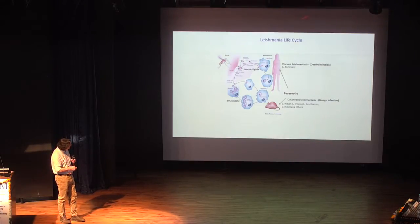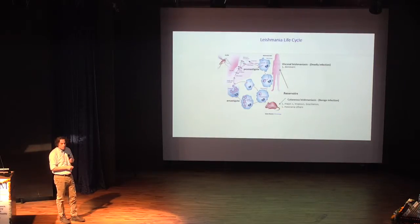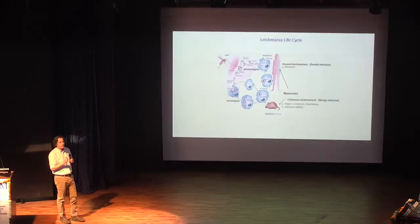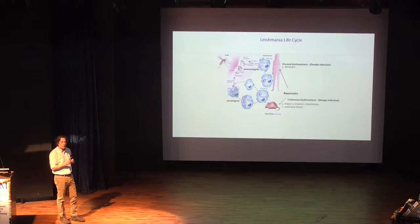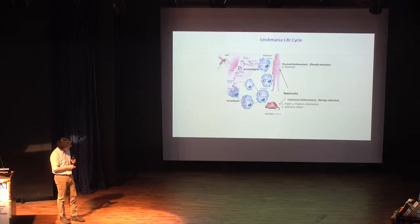One of the advantages of leishmania is that it has a promastigote form, and these grow beautifully in culture. This is the parasite that's easiest to work with because you can grow these things so well in culture, and you can genetically manipulate them as I'll show.